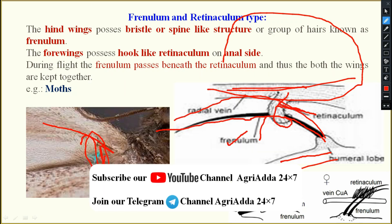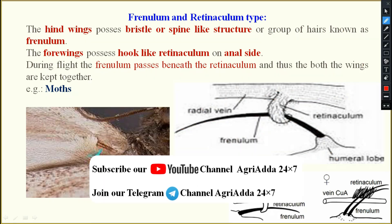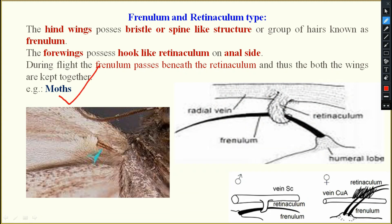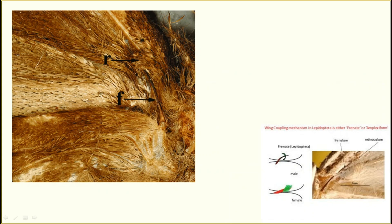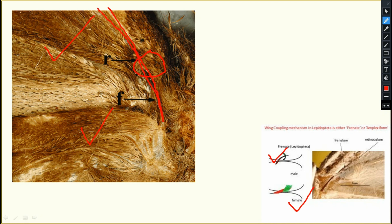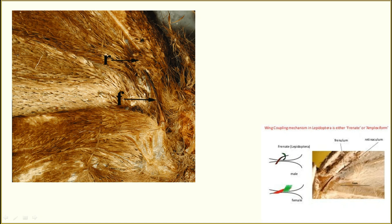The retinaculum is on the fore wing and the frenulum is on the hind wing. In the picture, the flap-like hook structure is the retinaculum and the frenulum is just like a bristle-like structure from the hind wing, so they are interlinked. In males a hook-like structure is present; in females a feather-like structure is present. The example is moths.